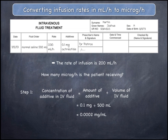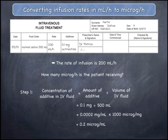This has been expressed in mg per mL and should be changed to micrograms per mL, because the final result we require is expressed in micrograms per hour rather than milligrams per hour. To do this, multiply by 1,000 micrograms per mg, giving a concentration of octreotide in the IV fluid of 0.2 micrograms per mL. This means that every 1mL of the IV fluid contains 0.2 micrograms of octreotide.